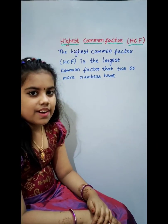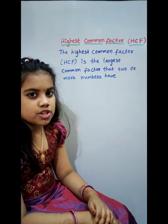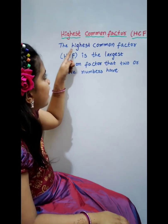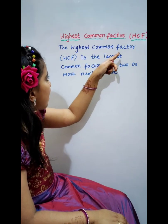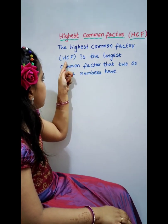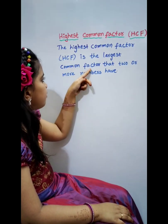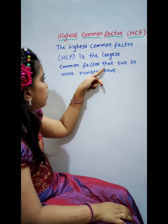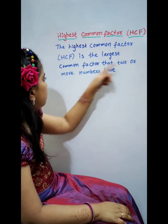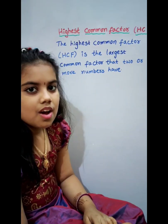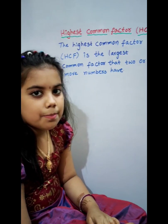Next one is Highest Common Factors. The Highest Common Factor, HCF, is the largest common factor that 2 or more numbers have. For example,